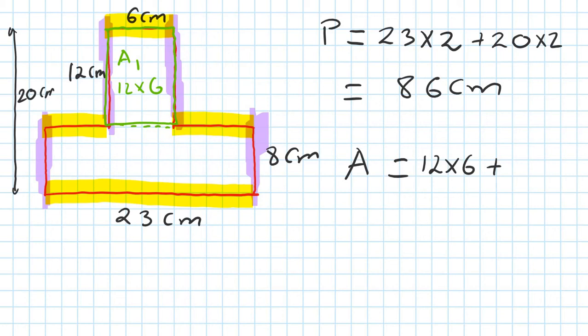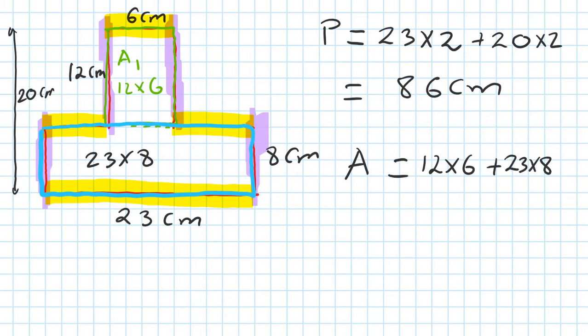And this one here - area two is equal to 23 times 8, because it's length times width. So 23 times 8. If you type this in your calculator, you should get 256 centimeters squared. That's how you do it.